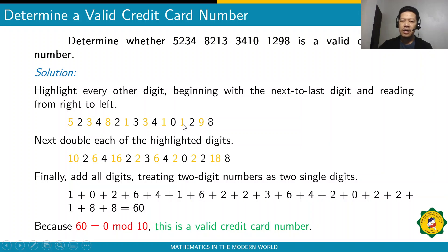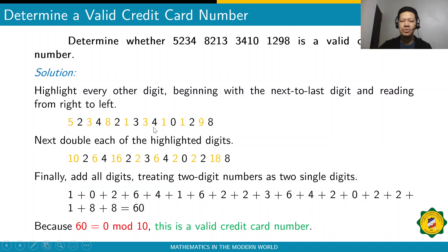Now you need to double — multiply by 2 — those highlighted digits. So: 9 times 2 is 18; 1 times 2 is 2; 1 times 2 is 2; 3 times 2 is 6; 1 times 2 is 2; 8 times 2 is 16; 3 times 2 is 6; and 5 times 2 is 10.